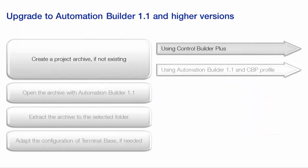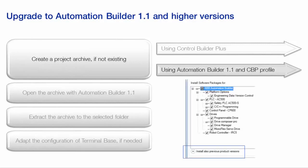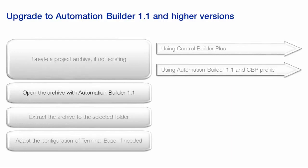The first step is to create a project archive, if it wasn't already created. A project archive could be created either in the Control Builder Plus software, or in the Automation Builder 1.1 environment. In case of Automation Builder 1.1, the prerequisite is to have the previous version profiles installed beforehand. The next step is to open and extract the archive project into a selected folder using Automation Builder 1.1 profile.